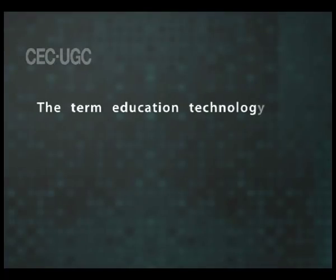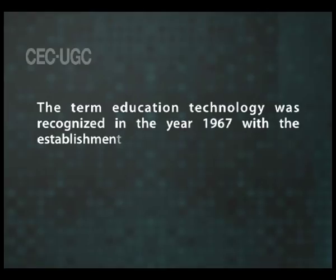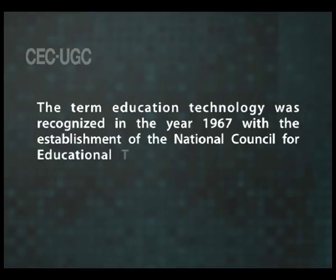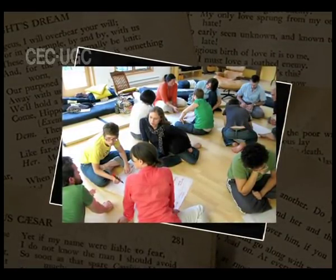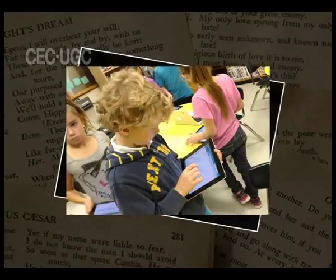The term education technology was recognized in the year 1967 with the establishment of the National Council for Education Technology in the United Kingdom. The United Kingdom Association for Programmed Learning promptly added educational technology to its title in 1968. Educational technology is the study and ethical practice of facilitating learning and improving performance by creating, using and managing appropriate technological processes and resources. According to the Association for Educational Communications and Technology definitions and terminology committee, education technology includes other systems used in the process of developing human capability.